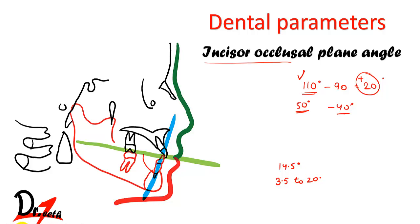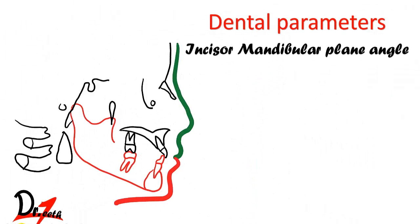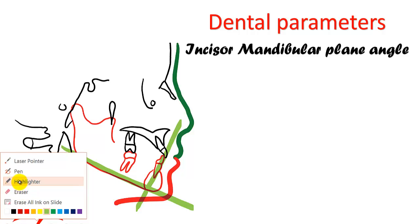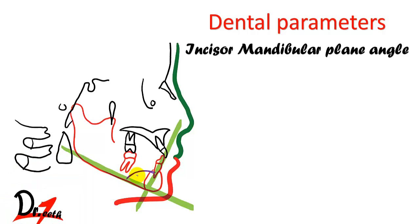Next is the incisor mandibular plane angle. In Downs analysis the mandibular plane runs from the gonion to the menton. We draw a line along the long axis of the lower incisor and measure the angle it forms with the mandibular plane. The mean angulation is 1.4 degrees and the range is minus 8.5 to 7 degrees. Again, if this angle increases it means the lower incisors are proclined.